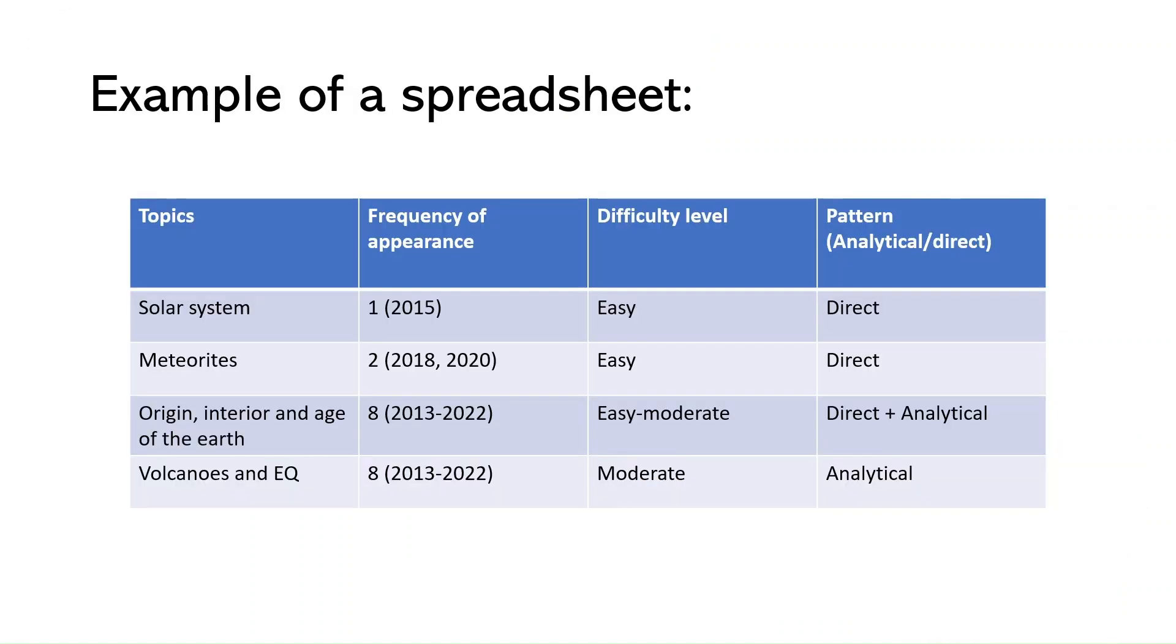As you can see here, I've done this analysis for the physical geology portion. From this analysis, it's evident that UPSC is not concerned with topics like solar system or meteorites much. Rather, its focus is more on conceptual and contemporary topics like interior and age of the earth, and volcanoes and earthquakes. Almost every year there are questions from these two topics. You must have heard of the 80-20 rule, which means 80% of questions will come from 20% of the syllabus. This is how you can identify those 20% of most important areas. This will significantly reduce the pressure and burden to complete the whole syllabus as well.